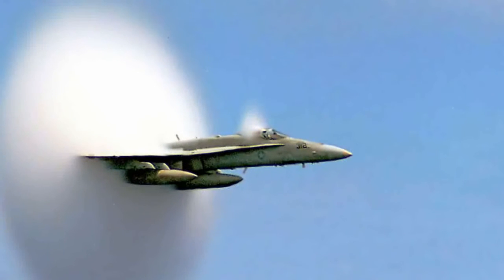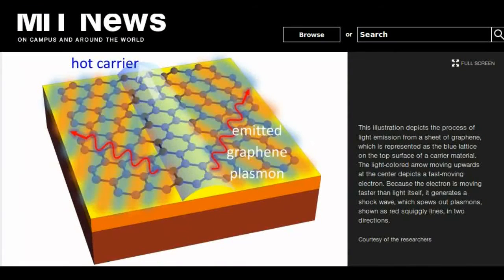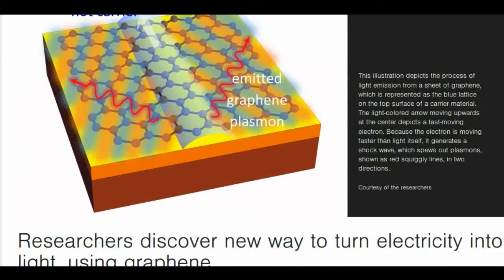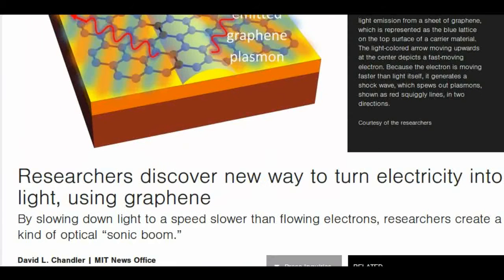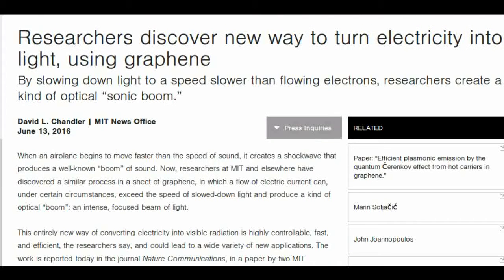Now researchers at MIT have discovered a similar process in a sheet of graphene, in which a flow of electric current can, under certain circumstances, exceed the speed of slowed-down light and produce a kind of optical boom—an intense, focused beam of light. This entirely new way of converting electricity into visible radiation is highly controllable, fast and efficient, and could lead to a wide variety of new applications.